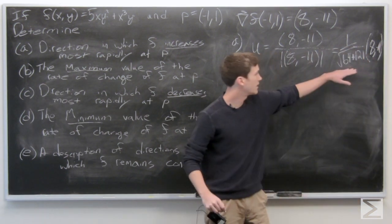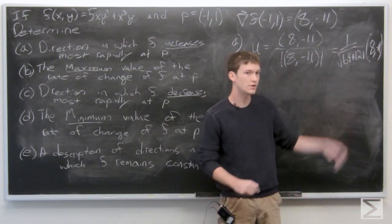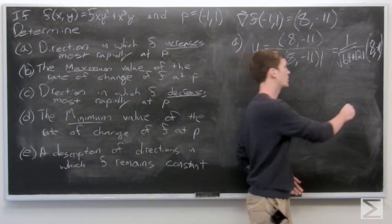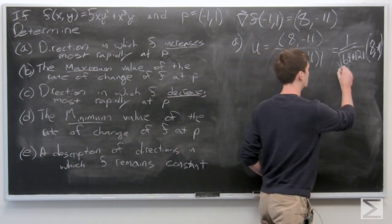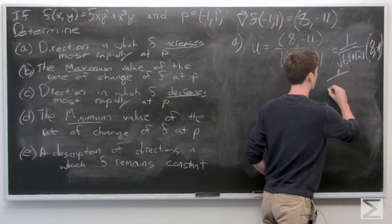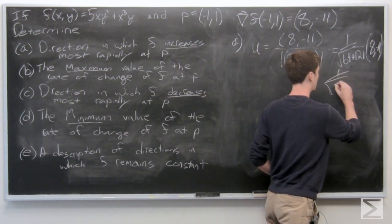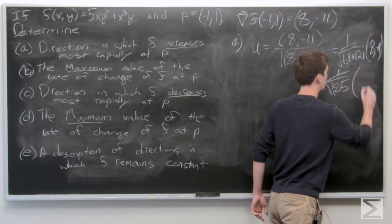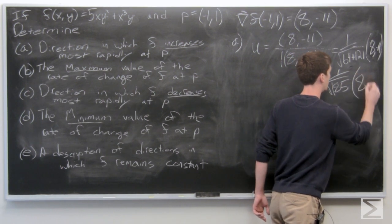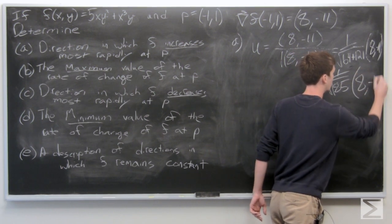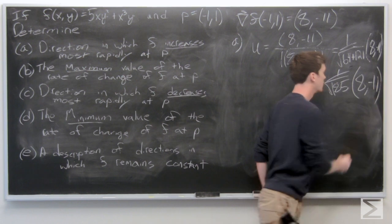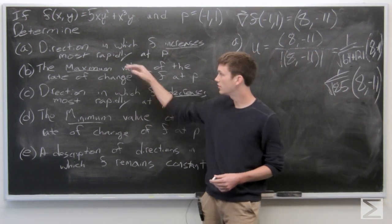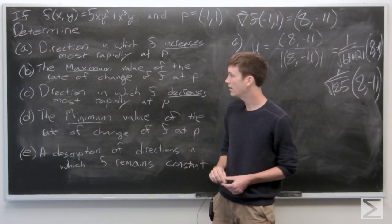We get 1 over the square root of 64 plus 121, which is 1 over the square root of 185, times the vector ⟨8, -11⟩. So that's our answer for part a.